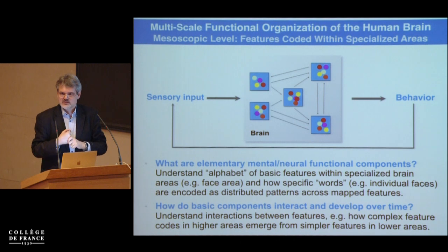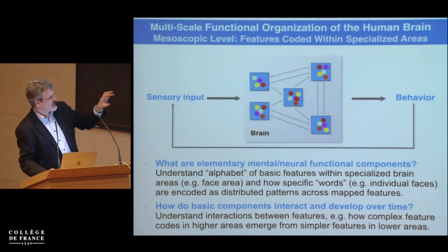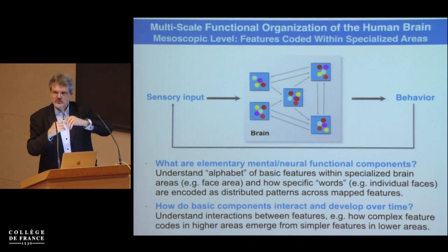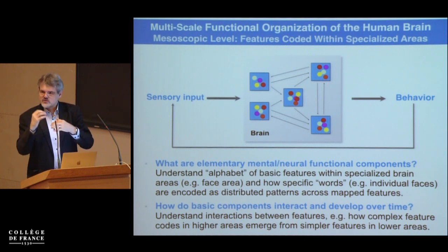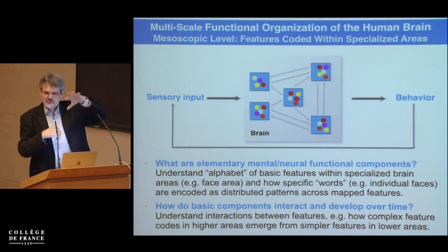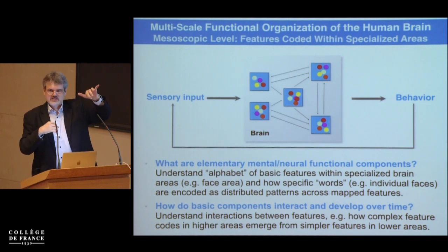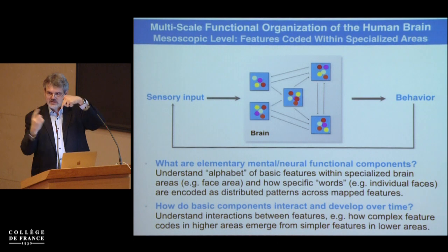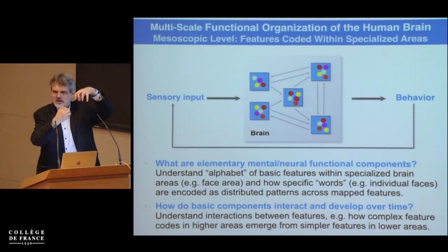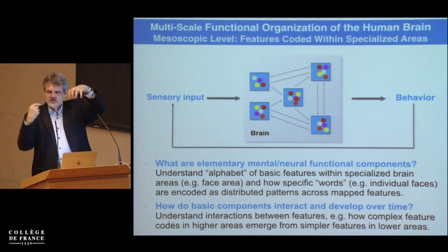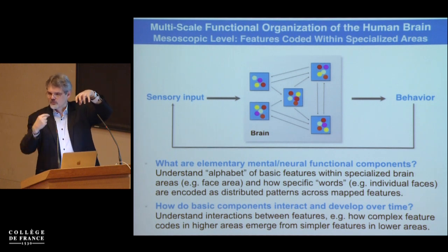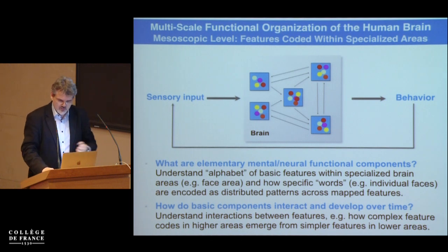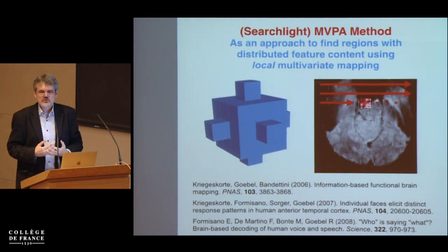We are not yet there, but the work I show today makes good steps in this direction. If we understand these features, we can look at how they change — for example, we are now replicating Gauthier's greeble studies with cars, mapping face features to see whether features coding the eyes get innervated by the front view of a car when subjects become car experts. These are the kinds of experiments I envision coming in the future.